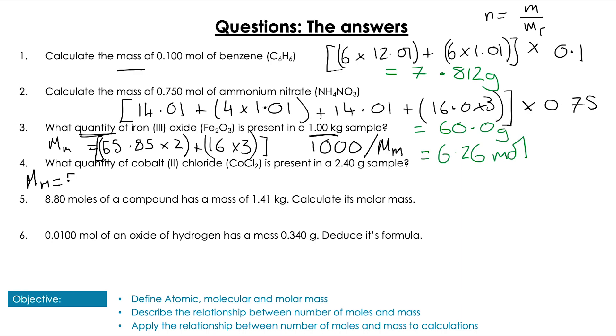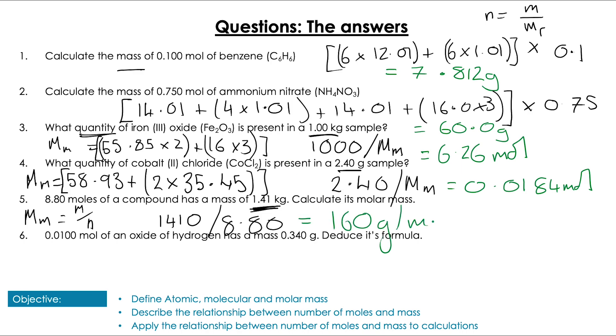Question four. Again, we're looking for moles. So I'm going to calculate my molar mass of cobalt chloride, which is 2 times 35.4 plus 58.93. And then I'm just going to divide my mass by that number, which gives me a total of 0.0184 moles. Next, we're calculating the molar mass. So that's going to be mass divided by moles. So I convert my mass into grams and divide it by the number of moles. Nice and easy. 1,410 over 8.8 is 160 grams per mole.